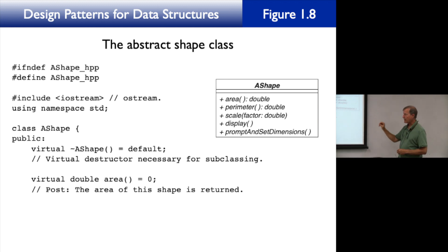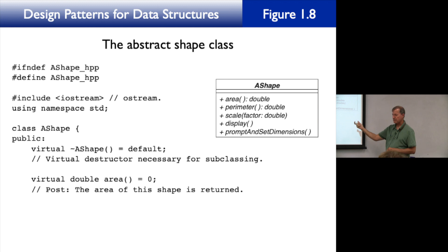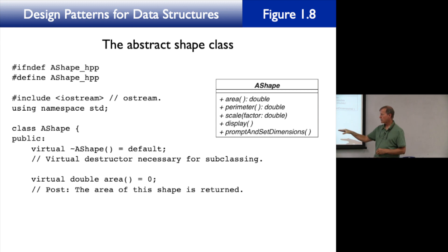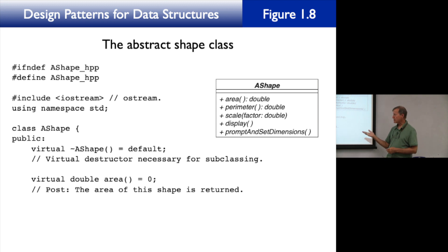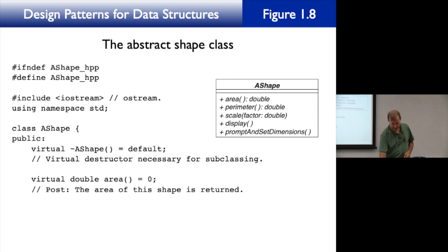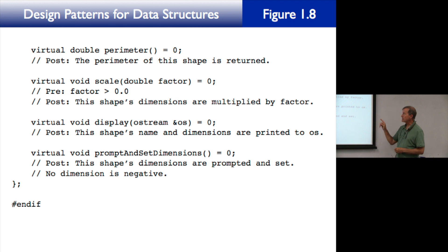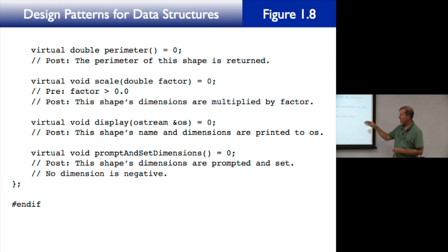We have the UML figure on the right and corresponding C++ code on the left. The destructor uses a tilde with an identifier having the same name as the class. The method area is declared virtual equals zero — in C++ that's called pure virtual; in UML it's abstract. The postcondition is that the area of the shape is returned. We also have methods: parameter, scale, display, prompt, and set dimensions.